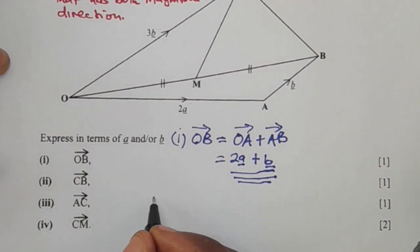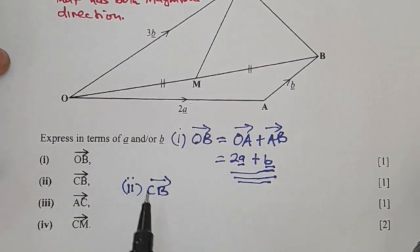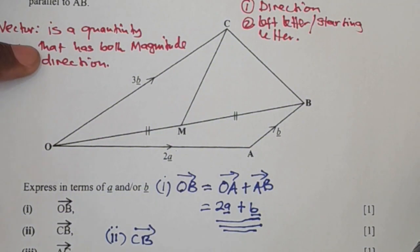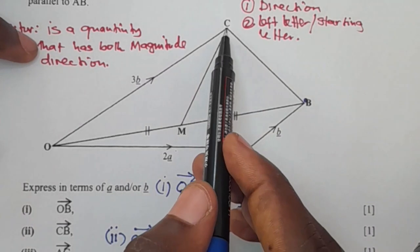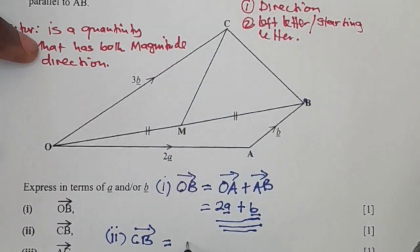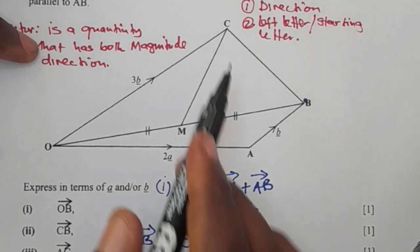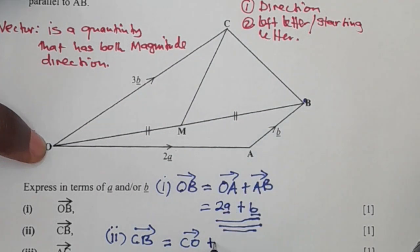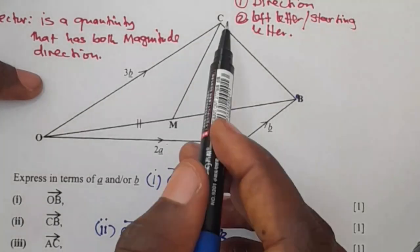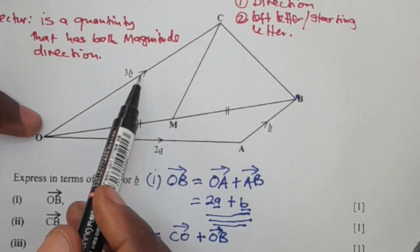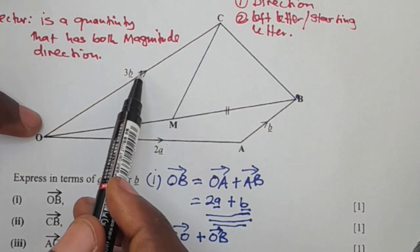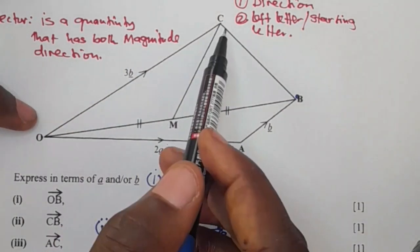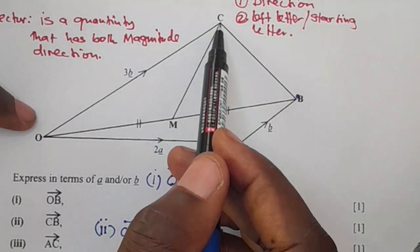Now, let's look at the second question. They want us to find CB. So again, this means that we'll start our movement from C. Now, CO is going to be negative. You can see that the arrow, the direction of a vector is going this way. But here we have CO.